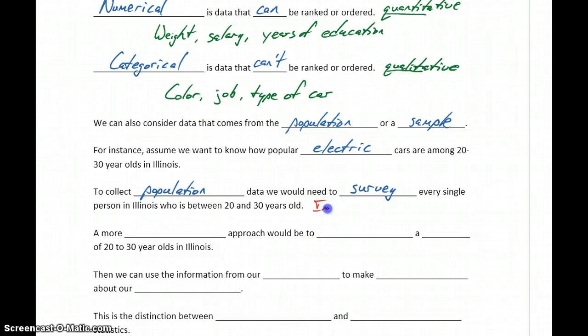Doing that would be nearly impossible. It would take a huge amount of money. It would take a significant amount of time. We would have to know who all the 20 to 30 year olds are in Illinois. We'd have to worry about if we are surveying people, are we surveying people who are in Illinois visiting from out of state? Do you actually live here? All sorts of things to take into consideration. Getting population data in this case isn't very realistic.